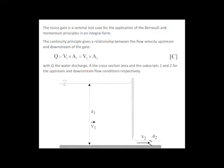The sluice gate is a seminal test case for the application of the Bernoulli and momentum principles in an integral form. The continuity principle gives a relationship between the flow velocity upstream and downstream of the gate.